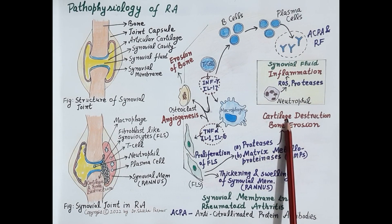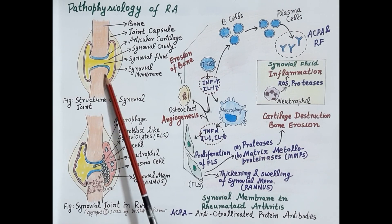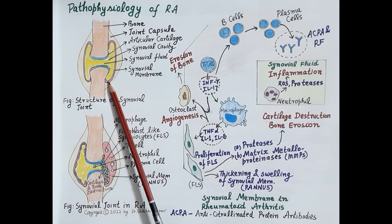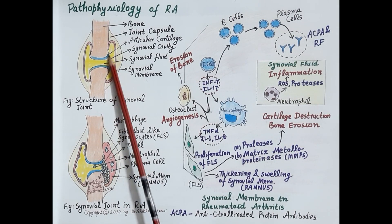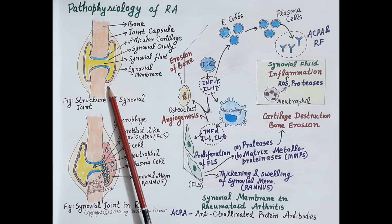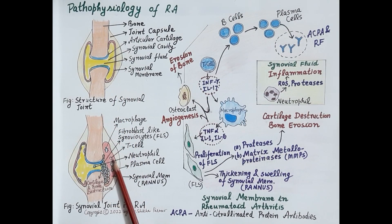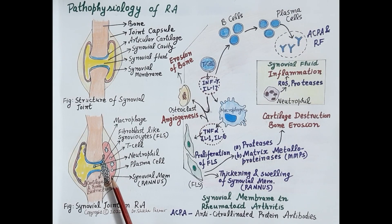These cytokines and antibodies target healthy joints, inducing thickening of the synovial membrane, producing inflammation, destroying cartilage, and destroying bone. A normal synovial membrane in pink can be compared to the thickened, inflamed synovial membrane seen in rheumatoid arthritis.